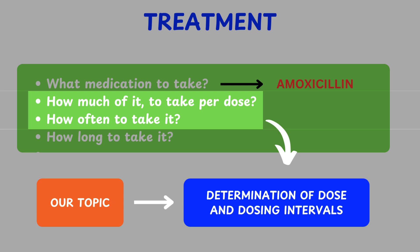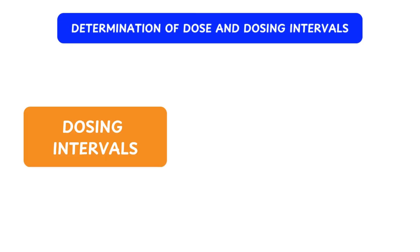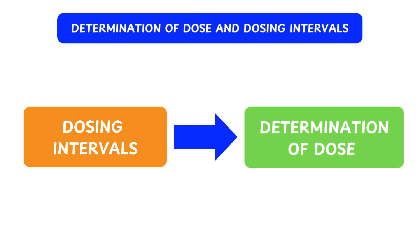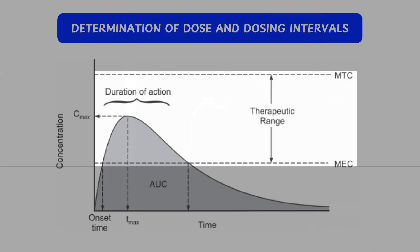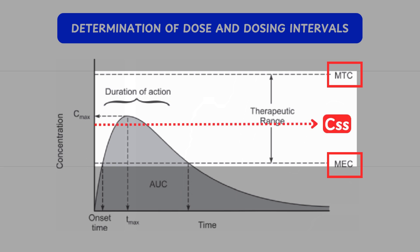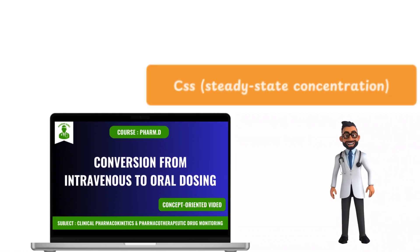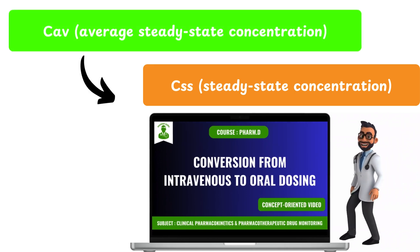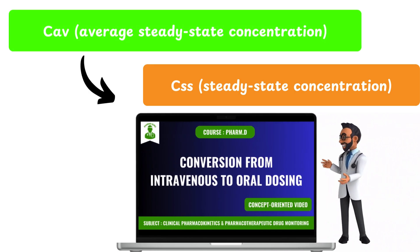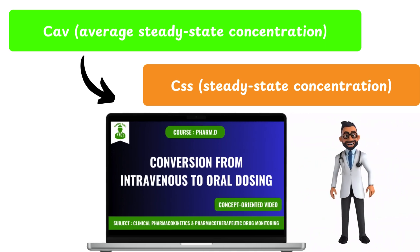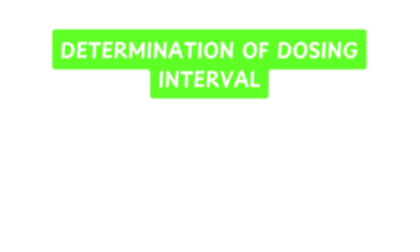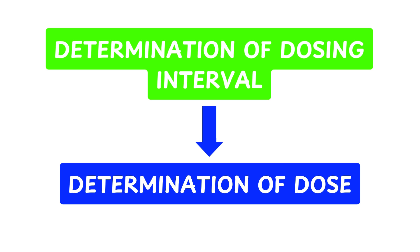Key points to remember: while calculating dose and dosing intervals, always calculate the dosing interval first, followed by the dose. For any drug, this is the therapeutic window — the range between the minimum effective concentration (MEC) and the maximum safe concentration (MSC). Our primary goal is to maintain the steady-state concentration of the drug within this therapeutic range. If you're unfamiliar with concepts like steady-state concentration or average steady-state concentration, we've explained these in detail in our previous video on conversion from intravenous to oral dosing. Now, let's proceed to discuss determination of dosing interval, followed by determination of dose.